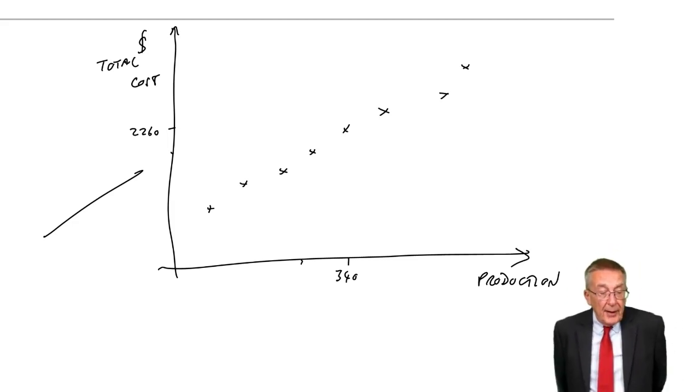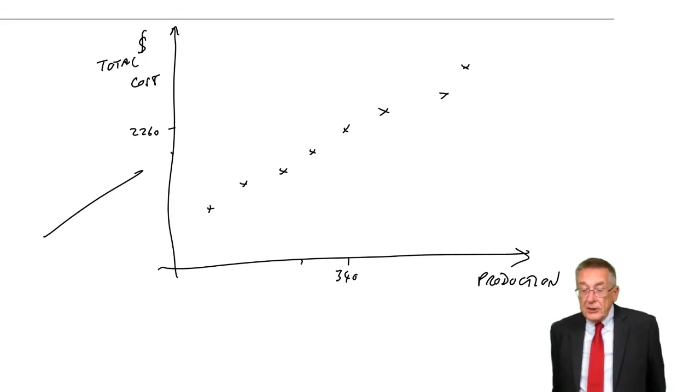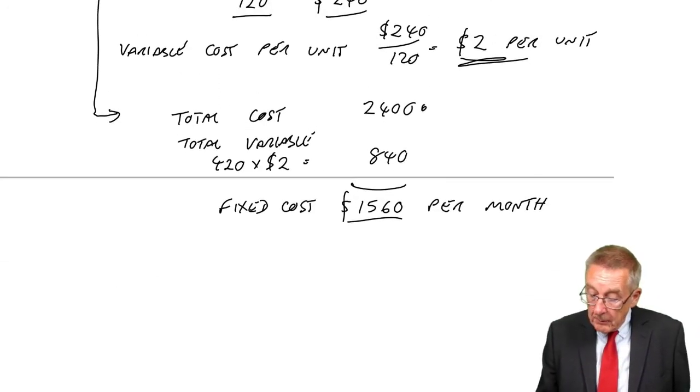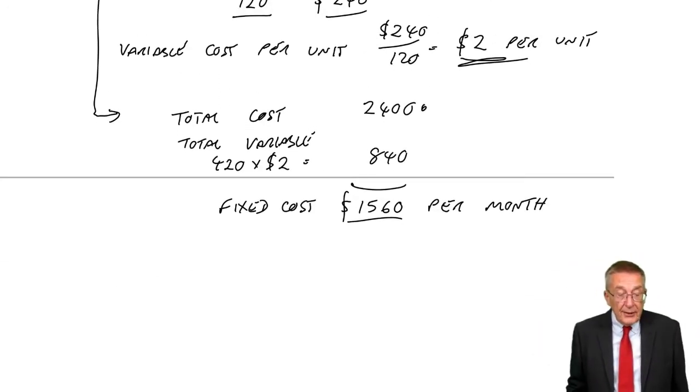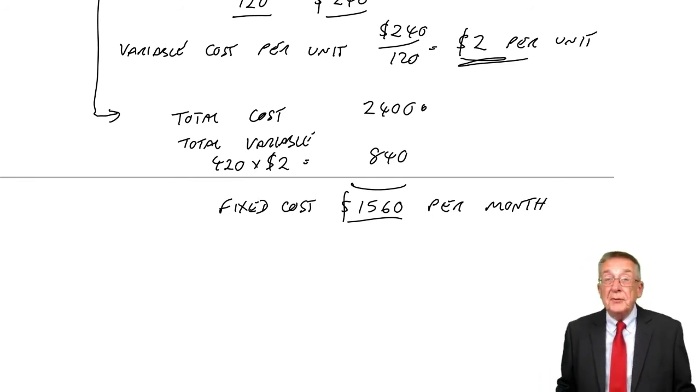If not, check February, March, April. Check every month. And just check at $2 a unit plus $1560. Do we get the right figure? Look at January. January, 340 units at $2 a month would be $680. Add $1560. Total cost should be $2240. Oh, here is $2260.